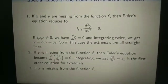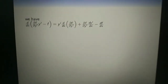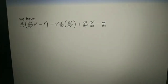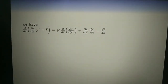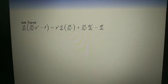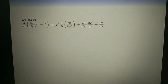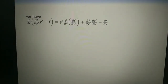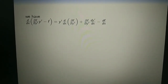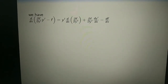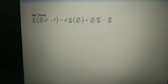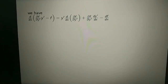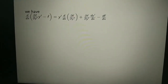Case 3: If x is missing from the function f, we consider the term d/dx of (∂f/∂y' · y' minus f). We will show that it equals 0 by applying Euler's differential equation and the fact that ∂f/∂x equals 0. Applying the product rule to the first term, d/dx of (∂f/∂y' · y') equals y' · d/dx(∂f/∂y') plus ∂f/∂y' · d/dx(y').